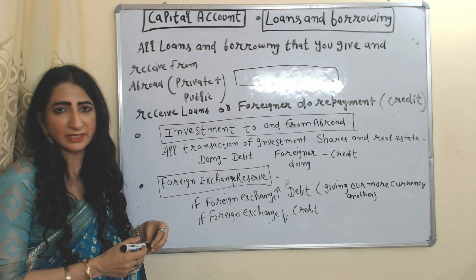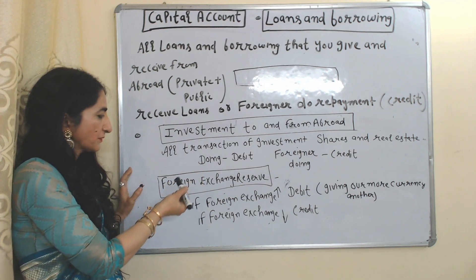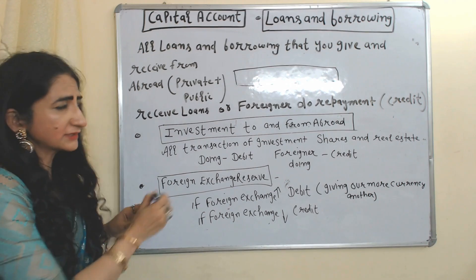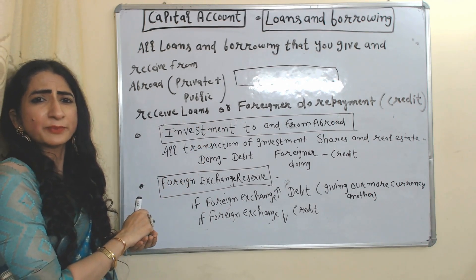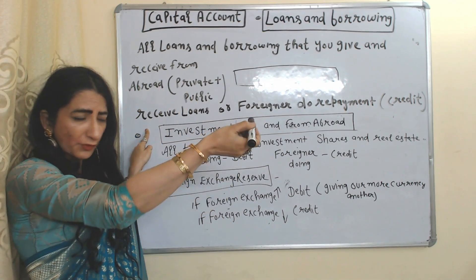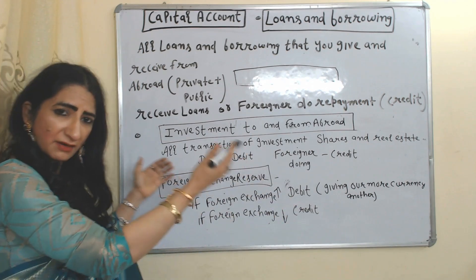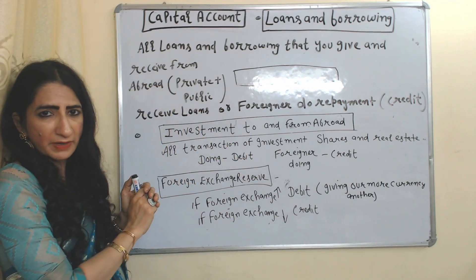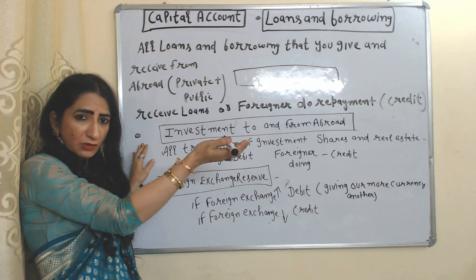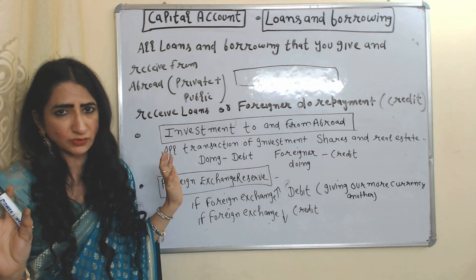Now we will see the Capital Account. Capital Account includes loans and borrowings, investment to and from abroad, and foreign exchange reserves. All types of loans and borrowings you give and receive from abroad — either private or public — are included. If you receive loans from a foreign country or foreigners repay your loans, money is coming in, so it will be credited. But if you give loans abroad or repay your loans to a foreign country, money is going out, so it will be debited.